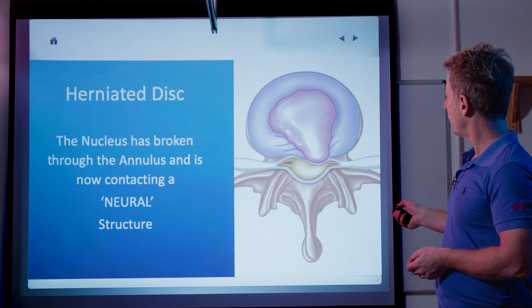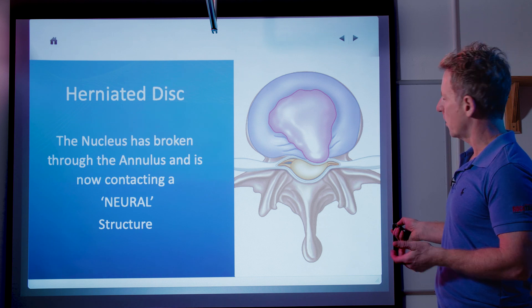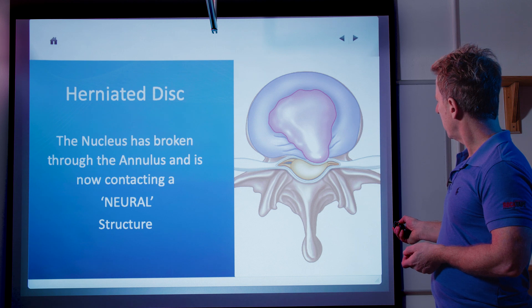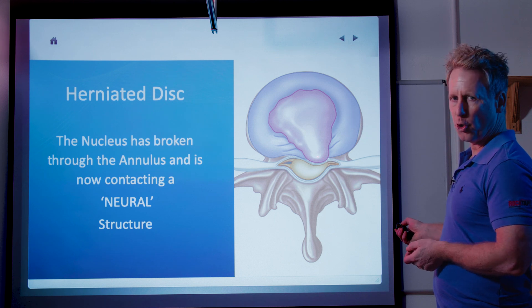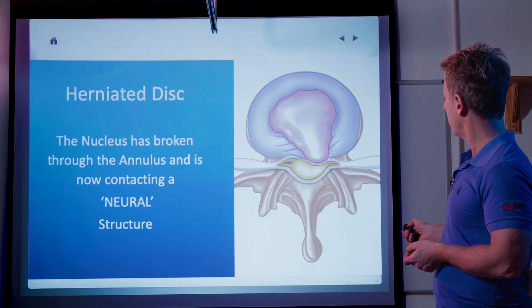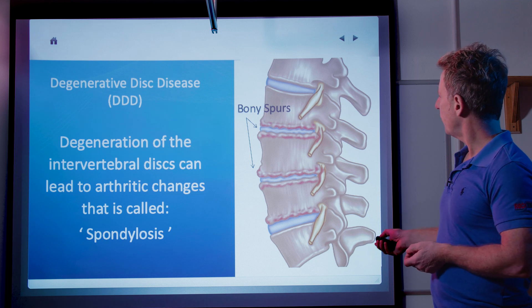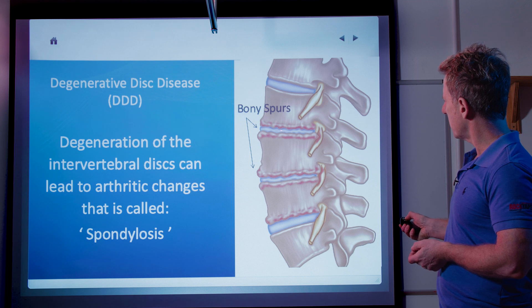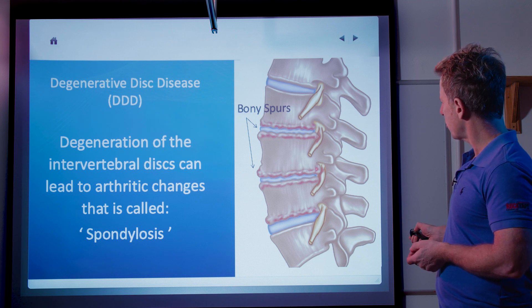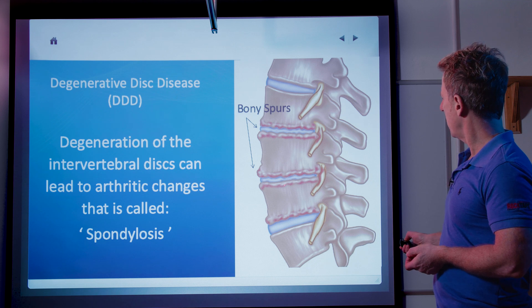Now look at this one — the water-based nucleus has migrated through the annulus and is now touching the spinal cord, or in the lumbar region the cauda equina. The nerve root where it comes out is going to give you pain wherever that nerve goes — in the neck it gives arm pain, in the lumbar it gives sciatic-type symptoms. This is degenerative disc disease where the vertebral height is reducing, the disc deteriorates, osteophytes increase, and it becomes spondylosis. You might also find the facet joints are compressed.